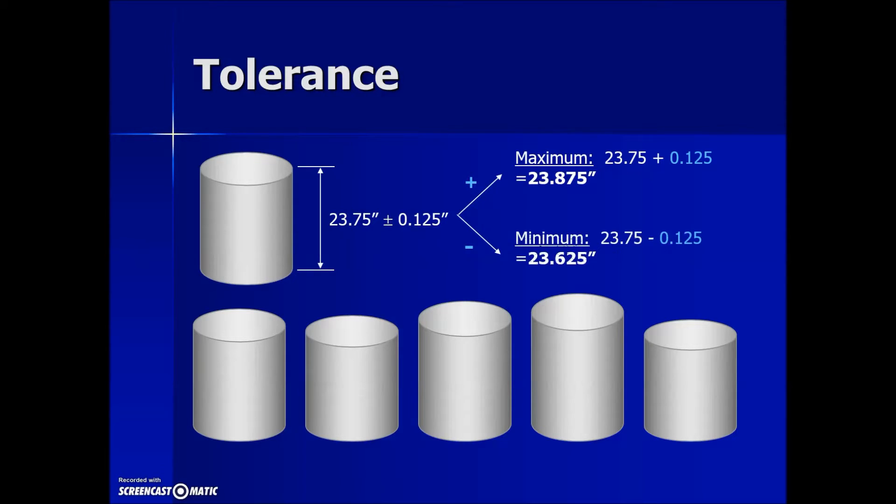If we go to the minus side and do the subtraction, we will get the minimum allowable measurement by taking the ideal or standard measurement minus the variation to result in 23.625 inches.